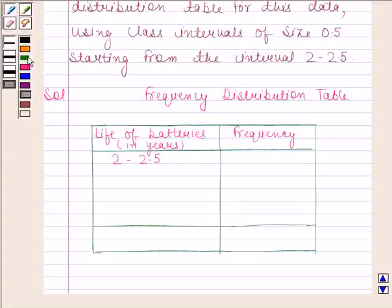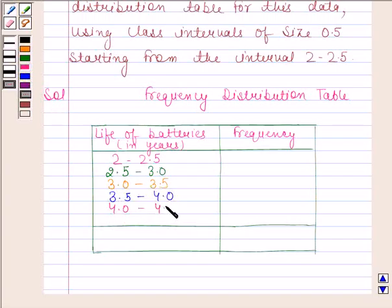So the remaining class intervals are 2.5 to 3.0, 3.0 to 3.5, 3.5 to 4.0, 4.0 to 4.5, and 4.5 to 5.0.